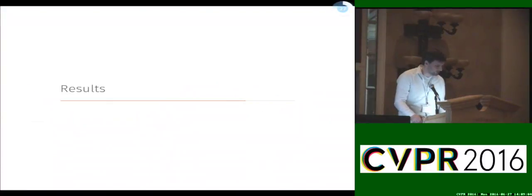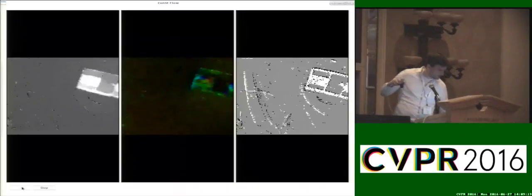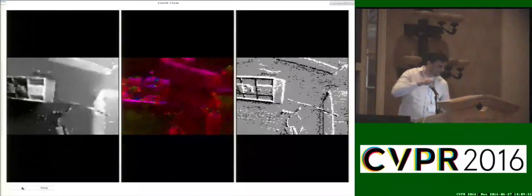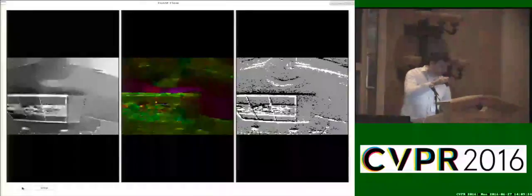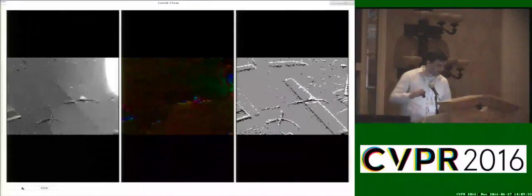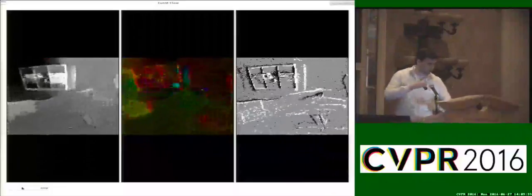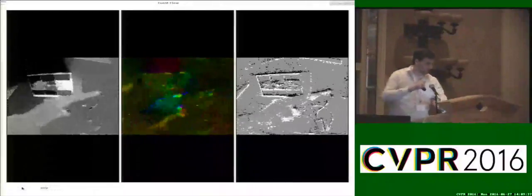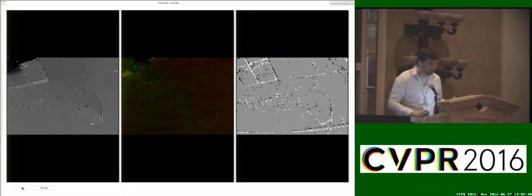So to highlight the performance of the proposed method here we prepared a series of video examples. But first to highlight the performance of our algorithm let me give you, well, let's see if that works. Let me give you an example of the system how it runs in real time. So here you can see that the system is capable of simultaneously reconstructing the intensities and gives an optical flow estimate of the environment. And this can be run in real time thanks to the primal dual minimization which we perform on the GPU of that laptop.